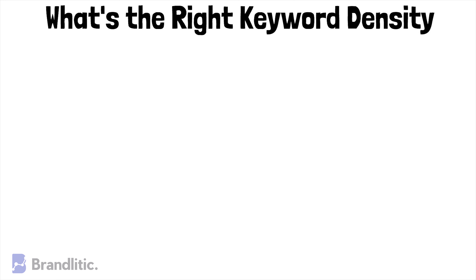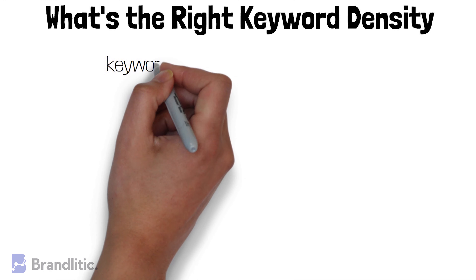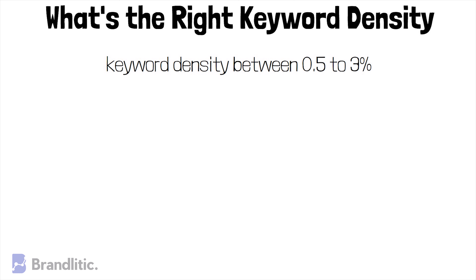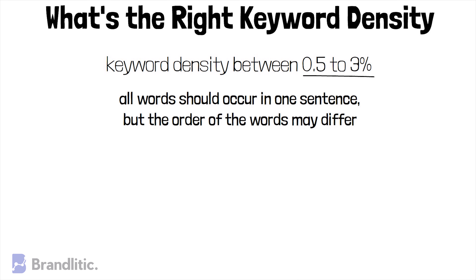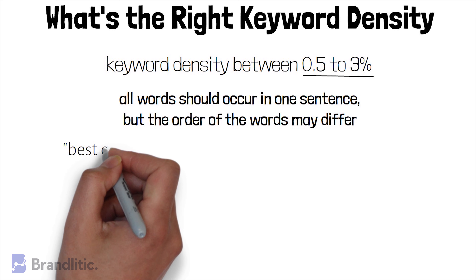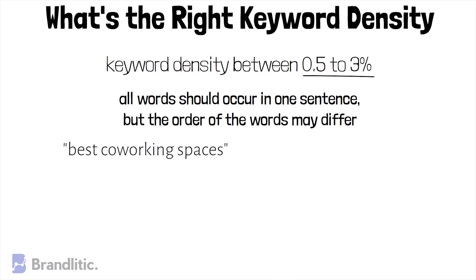Marketers generally recommend a keyword density between 0.5% to 3%. Note that for a match to be counted, all the words should occur in one sentence, but the order of the words may differ. For example, 'best coworking spaces' is different from 'best coworking places.' These are LSI keywords, which add a ranking factor and boost the visibility of the content for a variety of search terms.